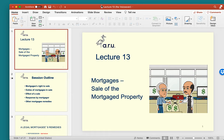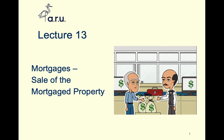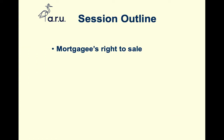Lecture 13 on mortgages. We're moving on to think about the bank's ability to sell the mortgage property. Usually a property will have been repossessed in the first instance, and then the bank are pushing for the sale in order to realize their debt — to refinance, return the funds to themselves, having seized and then sold the mortgage property. In this session, we look at how the bank have the ability to behave that way.